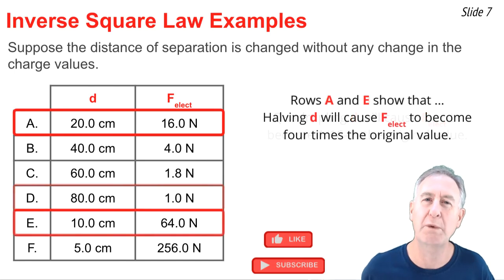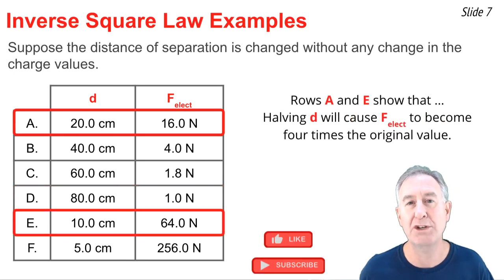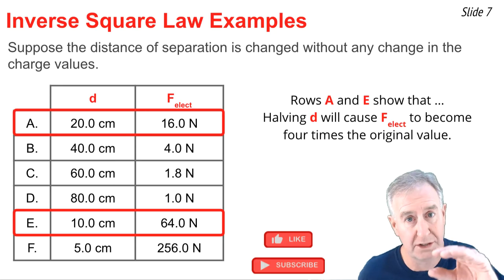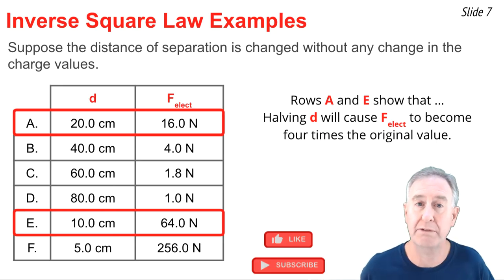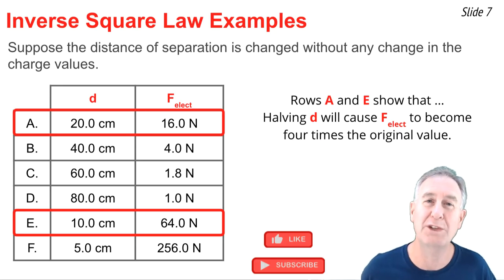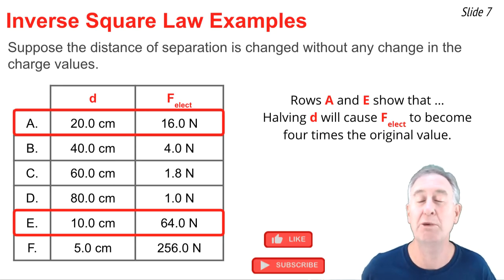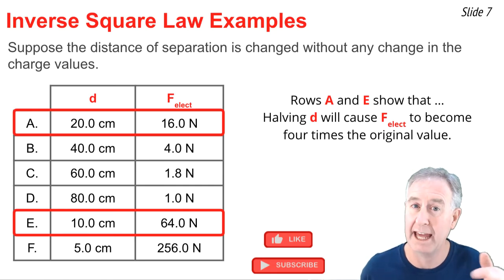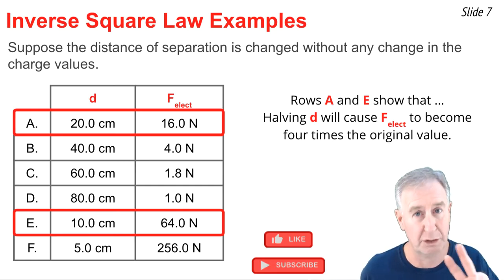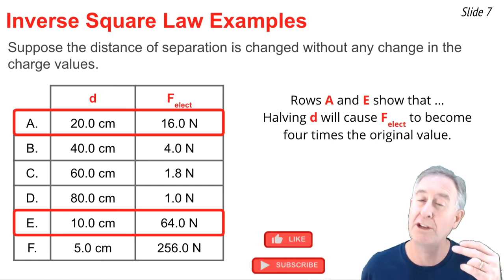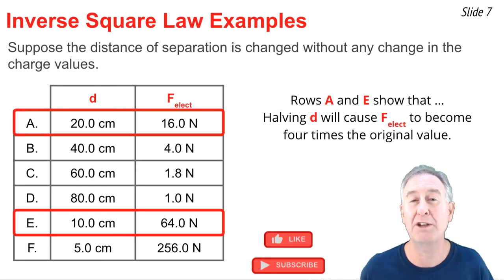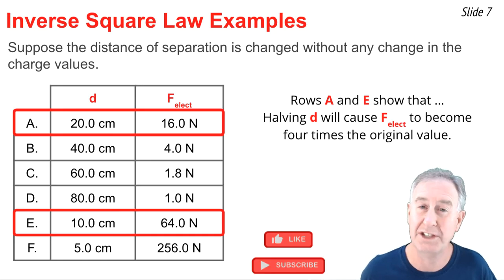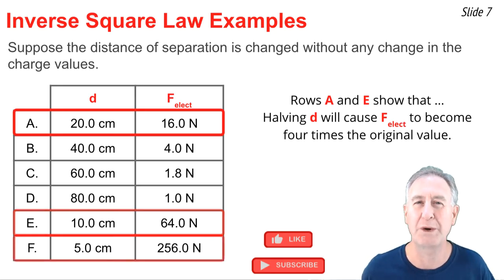Row A and E show that if you make the distance half of the original value — it was 20, and now it's 10 centimeters — you'll make the force four times bigger. That is, you take the halving factor, the 2, and you square it, causing the 16 newtons to become 64 newtons.